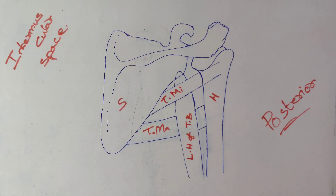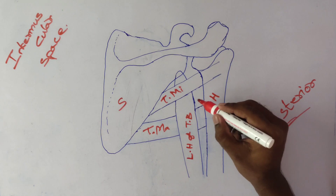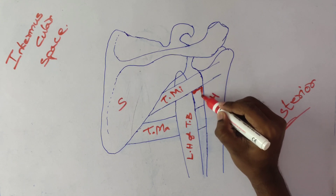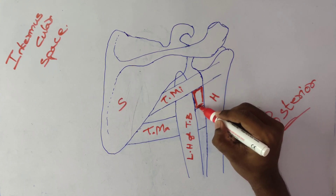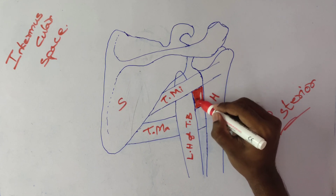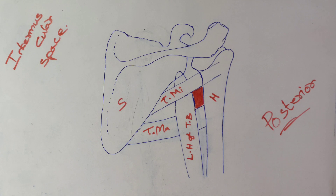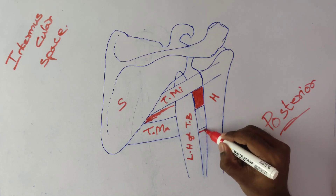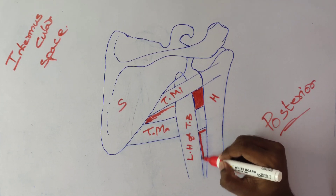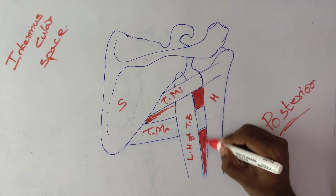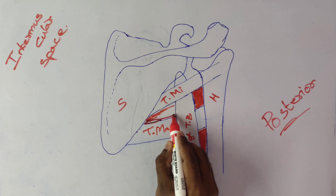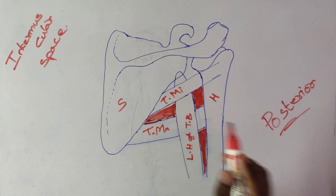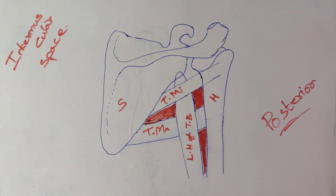In this region we have three spaces. The first one is the quadrangular space — I will draw this in red. This space is called quadrangular because its shape is quadrilateral. The next space is the upper triangular space, and the lower one is called the lower triangular space.